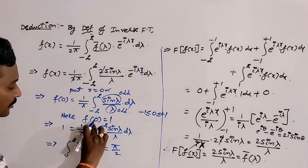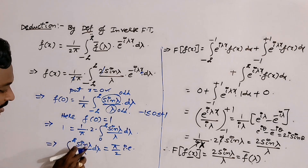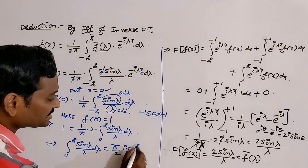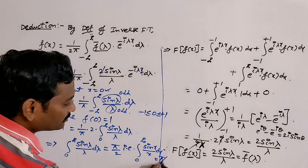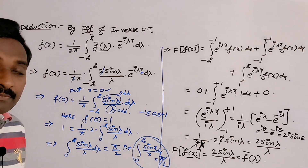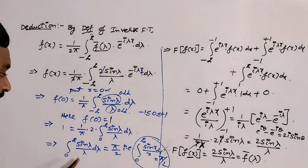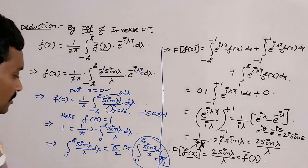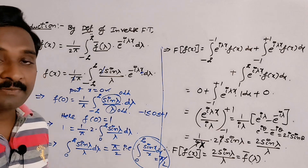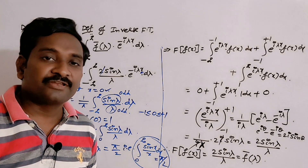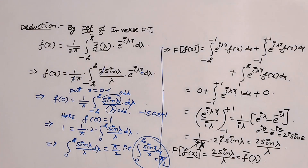Therefore, ∫₀^∞ sin(x)/x dx = π/2. This is the required result. Since in definite integration the variable name does not matter, we can replace λ with x and the result is the same. This is how we evaluate the integral using Fourier transforms. In the next video I will give more problems on Fourier transforms. Thank you very much.